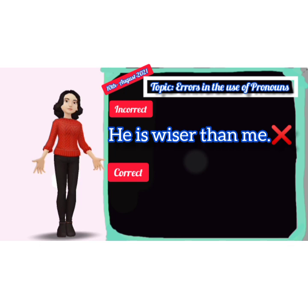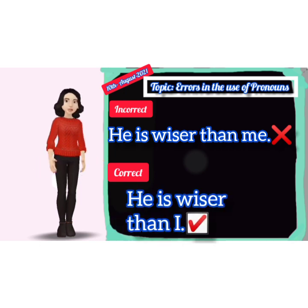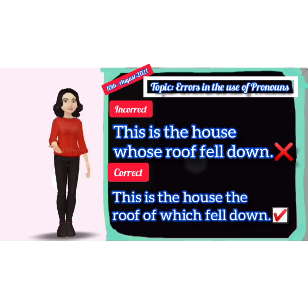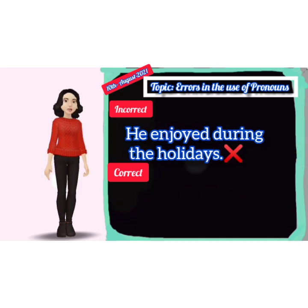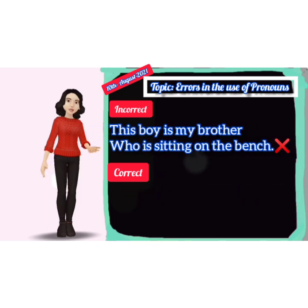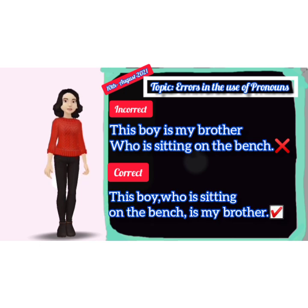Twelfth: incorrect — 'He is wiser than me.' Correct — 'He is wiser than I.' Thirteenth: incorrect — 'This is the house whose roof fell down.' Correct — 'This is the house the roof of which fell down.' Fourteenth: incorrect — 'He enjoyed during the holidays.' Correct — 'He enjoyed himself during the holidays.' Fifteenth: incorrect — 'This boy is my brother who is sitting on the bench.' Correct — 'This boy who is sitting on the bench is my brother.'